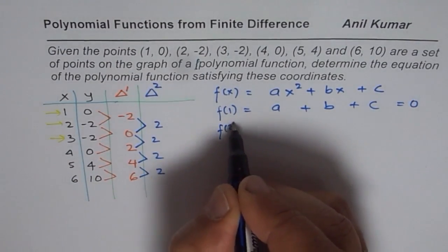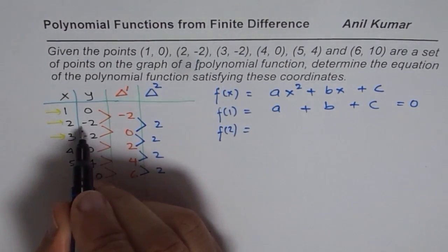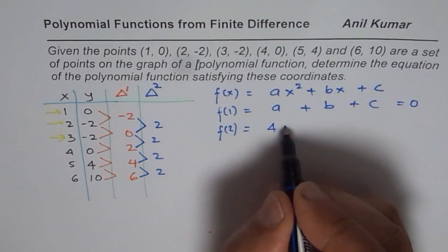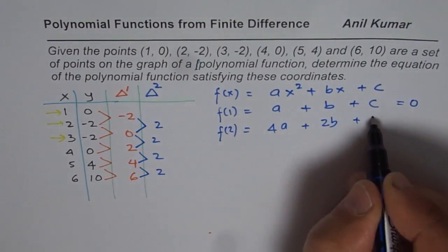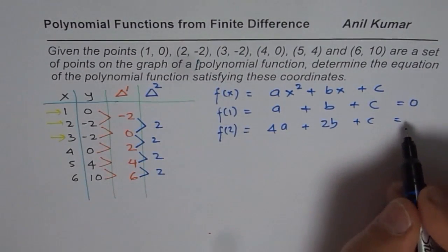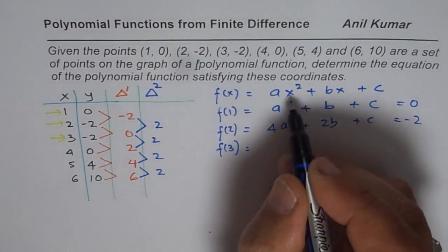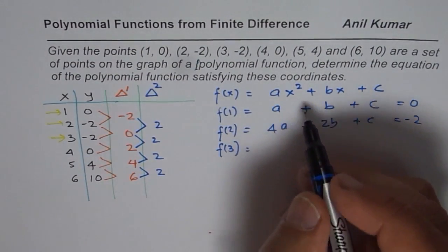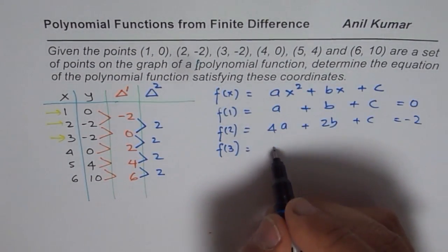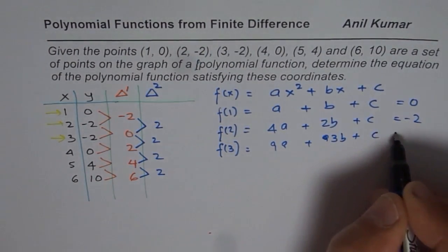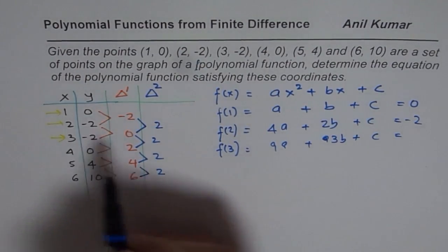Then you say f of 2 is equal to, you will do, 2 is substituted here, so 2 squared is 4. So we get 4a plus 2b plus c equals to, f of 2 is -2, so we will write -2. Then you say f of 3, and 3 squared is 9, so you get 9a, plus 9b, I mean, sorry, 3b, plus c equals to, see, there could be a lot of mistakes. At 3, it is -2.